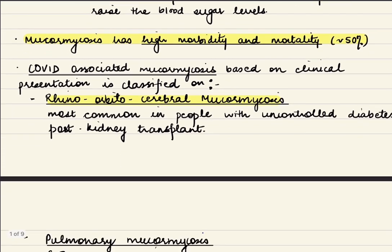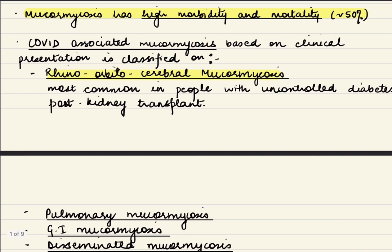COVID-associated mucormycosis can be classified depending on clinical presentation, the most common being rhino-orbito-cerebral mucormycosis. This is mucormycosis occurring in the nasal cavity which may spread to the orbit and brain. It is most common in people with uncontrolled diabetes and post-kidney transplant patients.